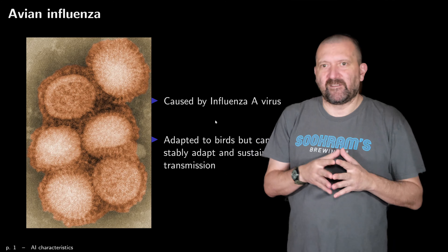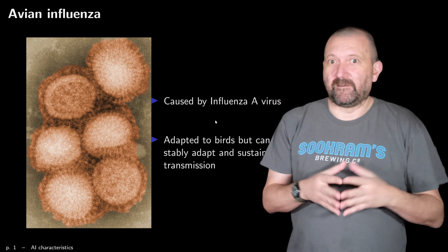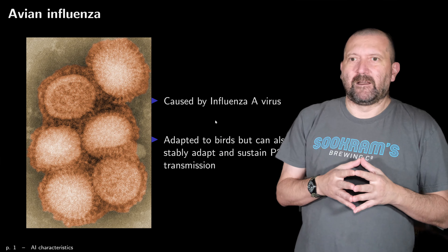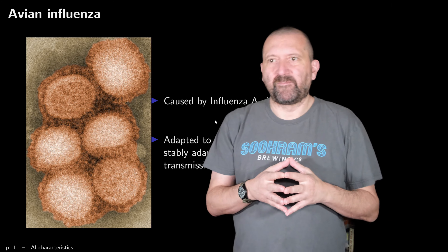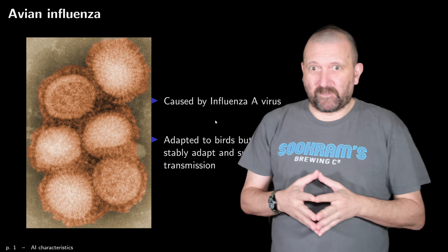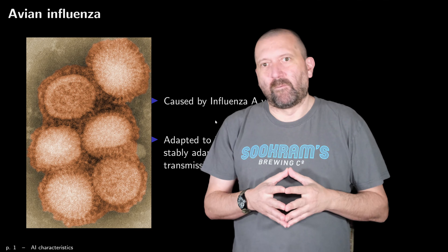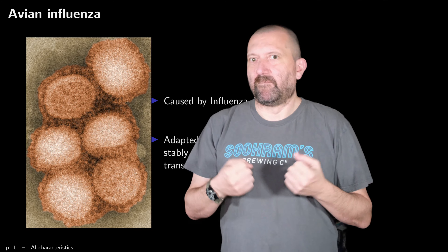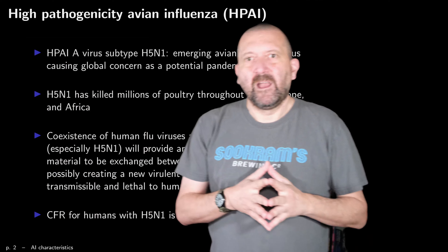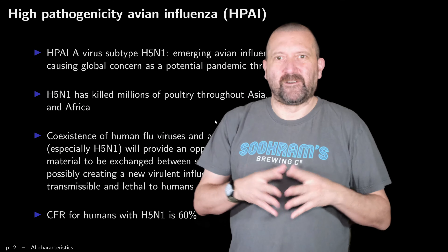In this second course on models of diseases in livestock, I'm going to introduce a few models of avian influenza. In the previous course we saw foot and mouth disease; we're switching to avian influenza here. What I want to do is go over a brief recap of the characteristics of avian influenza and then present a few models.